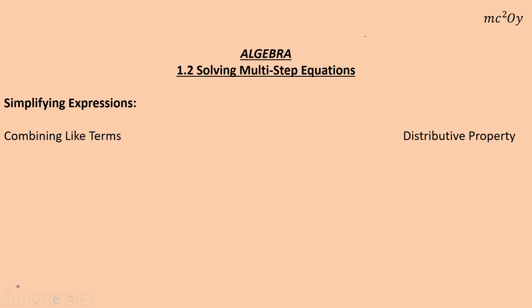Okay, talking about 1.2, solving multi-step equations. First thing we need to understand are what like terms are and distributive property means. That'll help us to simplify expressions, which helps us to solve the equation.